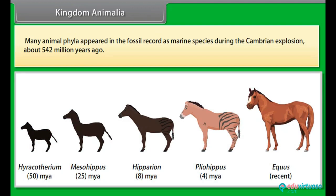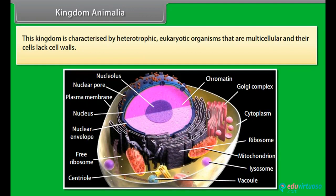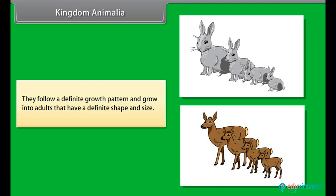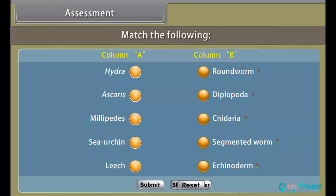Many animal phyla appeared in the fossil record as marine species during the Cambrian explosion about 542 million years ago. This kingdom is characterized by heterotrophic eukaryotic organisms that are multicellular and whose cells lack cell walls. They follow a definite growth pattern and grow into adults that have a definite shape and size.